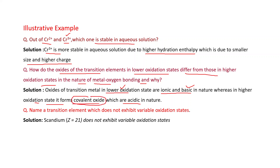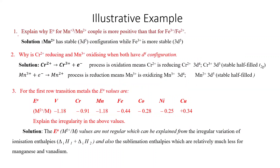In higher oxidation states, the oxide is covalent due to Fajans' rule — more polarization leads to more covalent character. Higher oxidation state means more positive charge, and the metal can accept electrons easily, which is why it is acidic in nature. A transition element that does not exhibit variable oxidation state is scandium — it has only one oxidation state: +3.